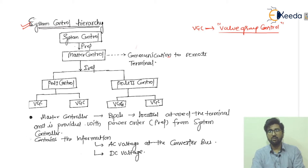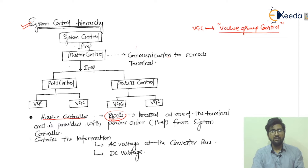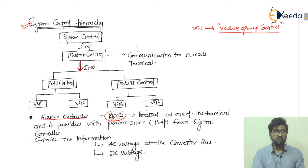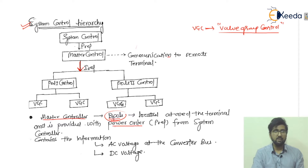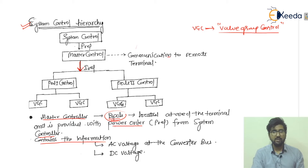Now let's talk about what the master control actually does. The master control provides the bipole — it provides the I_ref, that is the reference current, for pole one control and pole two control. The master control is located at one of the terminals and is provided with the power order, P_ref, that is the reference power from the system control.